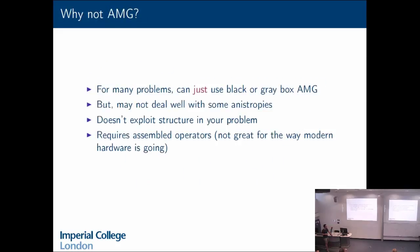One question you may be asking is: why am I not just using algebraic multigrid? There are very many reasons to use AMG — for many problems it's black box, you just have an assembled operator, hit go, maybe tweak a few parameters, and that's really good. You might want to use grey-box AMG where you provide some extra information. But AMG may not deal with some anisotropies, might not exploit structure available in your problem, and you really need assembled operators — which isn't great for the way modern hardware is going. Assembled matrices are really memory bandwidth bound, but modern hardware is giving you lots more flops but not much more memory bandwidth.